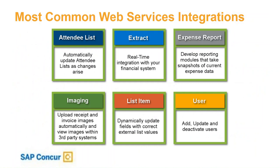The list item APIs cover the dropdown boxes in your invoice, expense, or travel request forms. You can keep those up to date in real time so your employees have the most recent cost object codes or job codes to choose from. The user APIs are usually an integration with your HR system — bringing over user provisioning for new users, deactivating users, or updating user data.